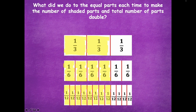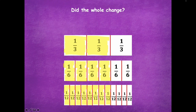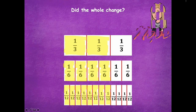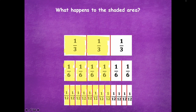To go from thirds to sixths, what did we have to do? We folded that paper in half — we cut them in two. Thirds get cut into two to make sixths, and sixths get cut into two to make twelfths. Did the whole change? Nope, it sure didn't — we just added more equal parts. What happens to the shaded area from two-thirds to four-sixths to eight-twelfths? It stays the same, because they're equivalent fractions.